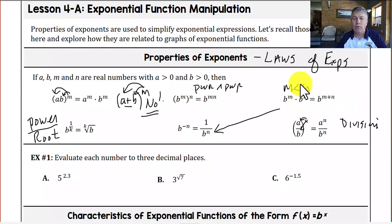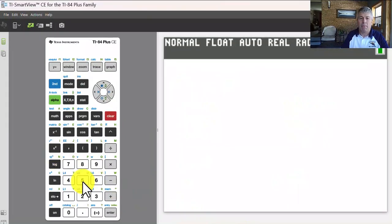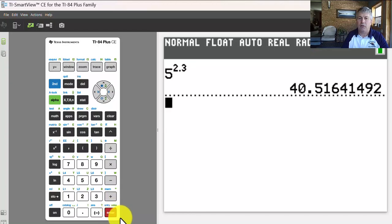In example 1, we want to evaluate each number to three decimal places. We will use our calculator for this. So 5 raised to the 2.3, we'll go to our calculator and take 5, and then we'll use the caret key, raised to the 2.3, enter, and we get 40.516.